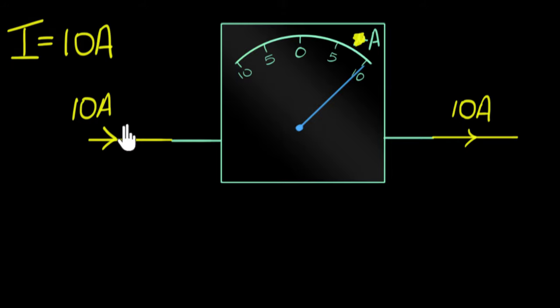And the reason we are done is because if we achieve this, then if there are lower currents, say for example, if there is 5 amperes of current that is going through, then automatically the deflection will become half. The deflection is proportional to the current. So all we have to do is basically achieve this. When 10 amperes goes, the deflection should show 10.